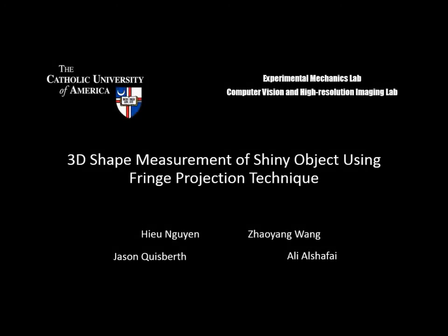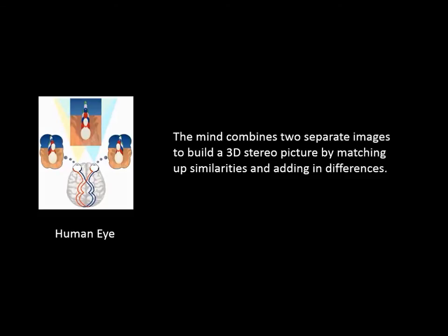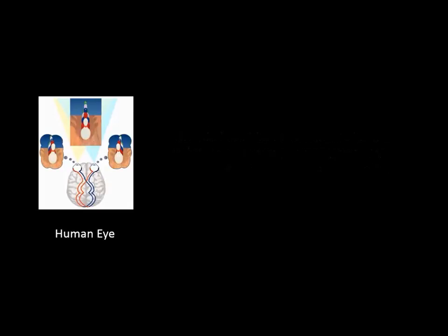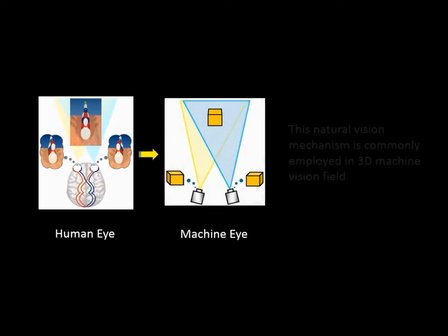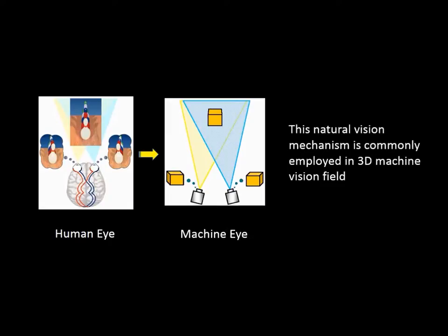3D shape measurement of shiny objects using the fringe projection technique. In human eyes, the mind combines two separate images to build a 3D stereo picture by matching up similarities and adding in differences. This natural vision mechanism is commonly employed in 3D machine vision.